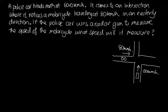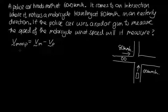What we need to work out is the velocity of the motorcycle relative to the police car. So that's the velocity of the motorcycle minus the velocity of the police car. Now we need to remember that these are vectors. So let's draw the line underneath them to show that they are vectors.